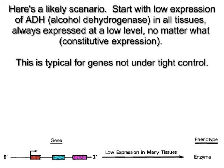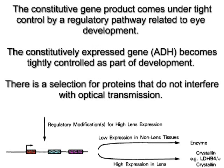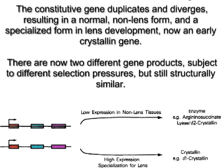This is typical for all genes not under tight control. The constitutive gene product comes under tight control by a regulatory pathway related to eye development. The constitutively expressed gene, ADH, becomes tightly controlled as part of development. There is a selection for proteins that do not interfere with optical transmission. The constitutive gene duplicates and diverges.